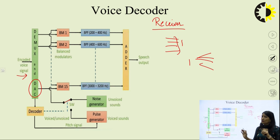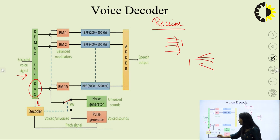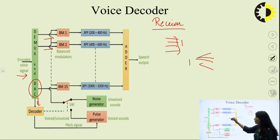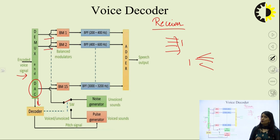DAC means digital to analog converter, so the signal will be converted back to analog form in separated form. This output is given to the decoder, and here we have equivalent balanced modulators BM1, BM2, up to BM15. At the transmitting end we used 15 bandpass filters; at the receiver side we are using 15 balanced modulators. Balanced modulators are used for frequency modulation and demodulation.